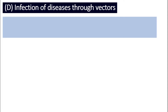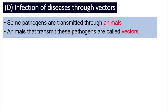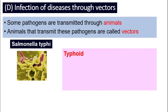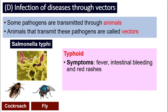Finally, the fourth way a disease can spread is through vectors. Some pathogens are transmitted through animals, and these animals that transmit the pathogens are called vectors. For example, typhoid — the pathogen that causes it is called Salmonella typhi, and the vectors are cockroach and fly. These vectors carry the pathogens and spread them to other people. The symptoms of typhoid are fever, intestinal bleeding, and red rashes, and it is infected through contaminated food and water.